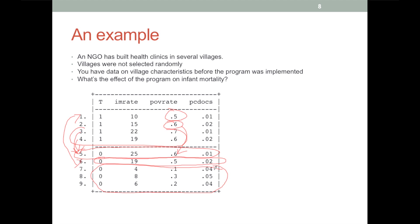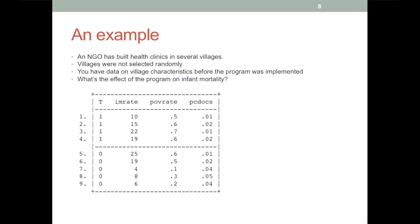It gets a lot more complicated when we have multiple background characteristics to match on, which we do in this case — we have the poverty rate and the per capita doctors. Looking at the first observation, it's not clear whether observation 5, which has the same doctors per capita, or observation 6, which has the same poverty rate, is a better match. If the administrators cared more about poverty rate when deciding where to build clinics, observation 6 would be the better match. And if they cared more about doctors per capita already there, maybe observation 5 would be a better match.